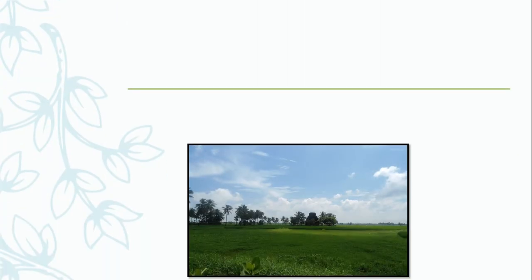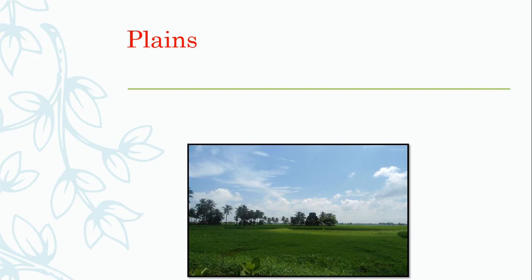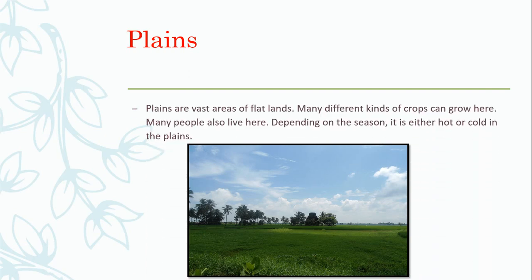Can you guess the type of land by looking at this picture? Yes, you are correct. It's plains. Now, what are plains? Plains are vast areas of flat lands. Many different kinds of crops can grow here. Many people also live here. Depending on the season, it is either hot or cold in the plains.